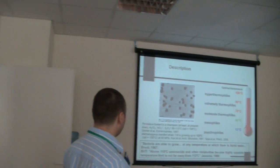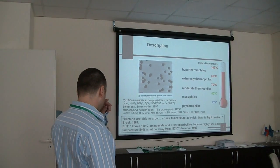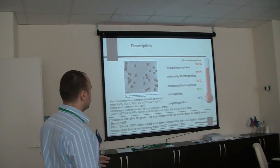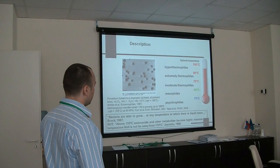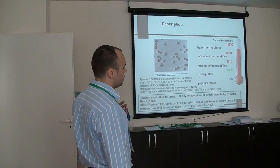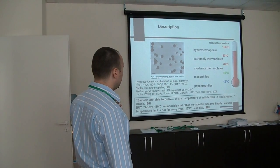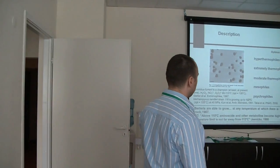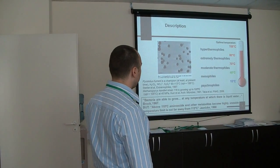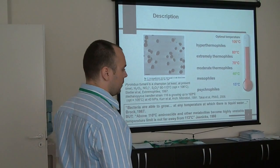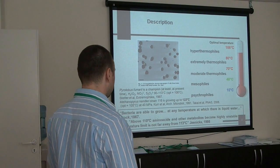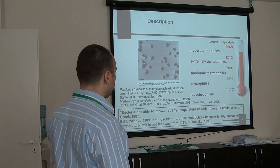What does it mean thermophilic micro-organisms? Very briefly, all organisms and micro-organisms are divided by their temperature of growth: psychrophiles growing at very low temperature, mesophiles growing at temperatures near the temperature of our body. And there are roughly three groups of thermophiles: moderate thermophiles growing at 50-60 degrees, thermophiles growing at 70-80 degrees.